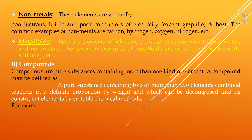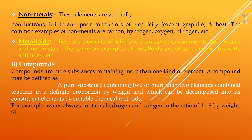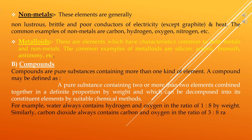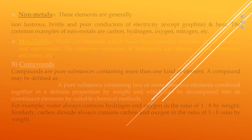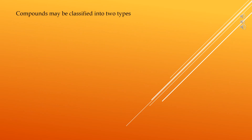For example, water always contains hydrogen and oxygen in the ratio of 1:8 by weight. Similarly, carbon dioxide always contains carbon and oxygen in the ratio of 3:8 by weight. Compounds may be classified into two types.